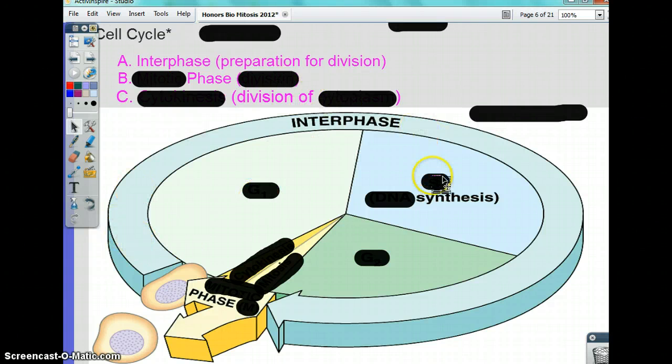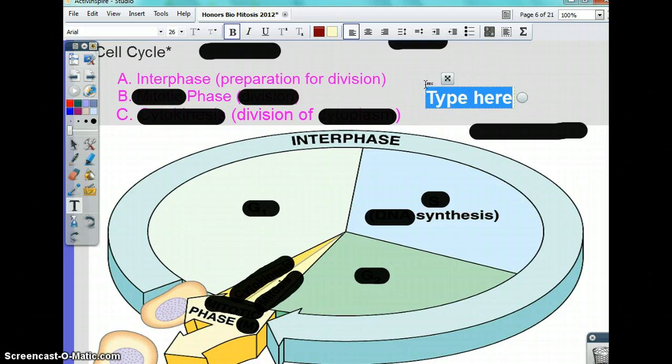Interphase, as you see right here, is the longest part of the cycle. I'm going to add that for you right here. The cell goes through the cycle constantly, but the longest part is interphase. I'm going to focus on that today.